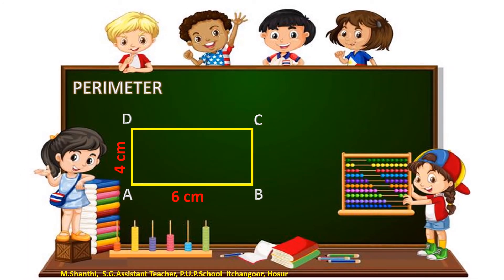How to find the perimeter of a rectangle? The opposite sides of a rectangle have the same lengths and are parallel. So, the perimeter of a rectangle is given by the formula P equals 2 times (length plus breadth).